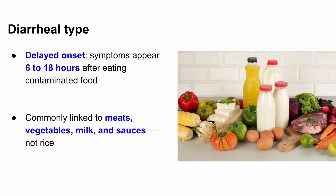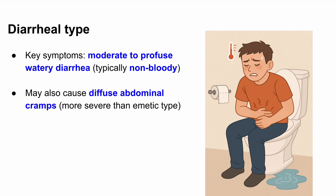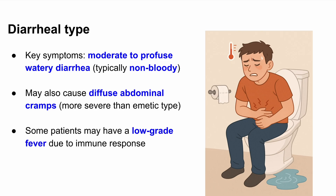What foods are usually involved in the diarrheal type? It's less likely to be rice. Instead, it's more commonly linked to meats, vegetables, milk, and sauces that have been improperly stored or reheated. The hallmark symptom is moderate to profuse watery diarrhea, which is typically non-bloody — a key feature to differentiate it from other types of infectious diarrhea. Patients may also experience crampy abdominal pain that's more diffuse and can be more severe compared to the emetic type. Some patients may have a mild low-grade fever, because the body is mounting an immune response in the gut.